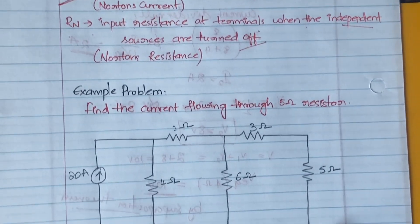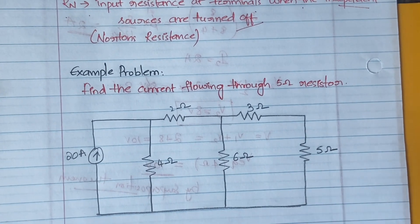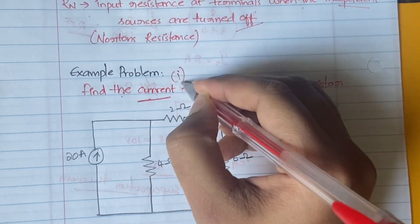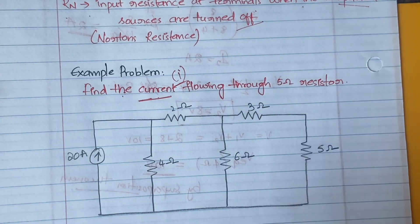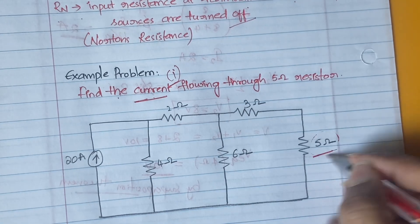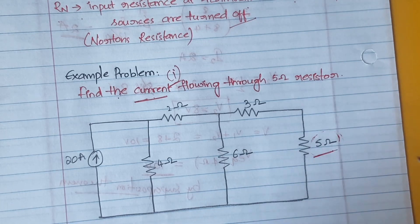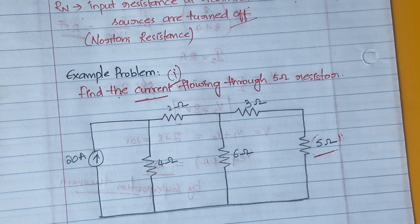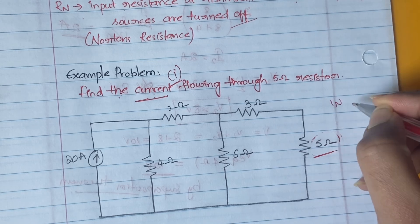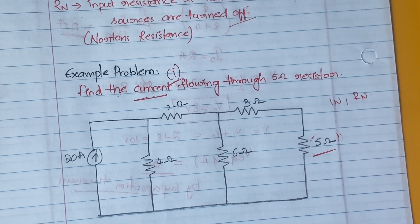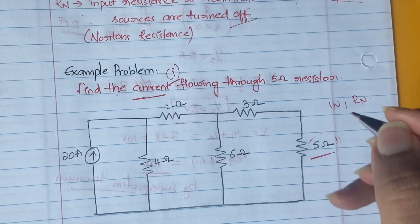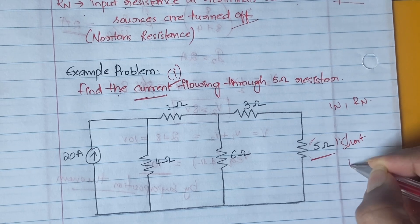Now let's look at our example problem. We have to find the current flowing through the 5-ohm resistor. In order to find this current, we first have to find IN, then find RN, and then we can calculate the current flowing through the 5-ohm resistor.